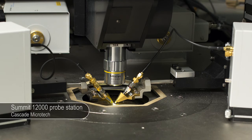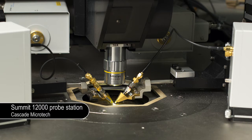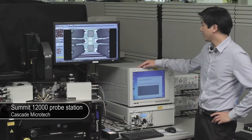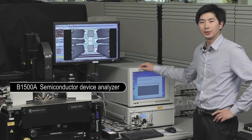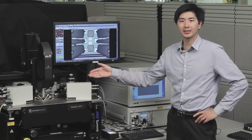Here we have a Cascade Microtech probe station. In this case, it's a Summit 12000. We also have a Keysight B1500A, the semiconductor device analyzer, used to apply bias to the device under test.